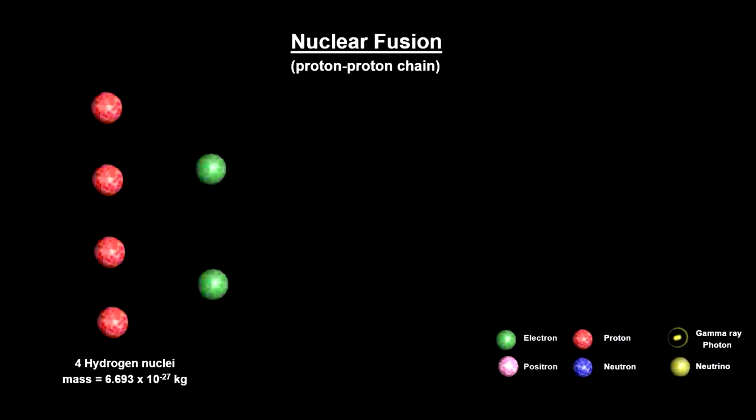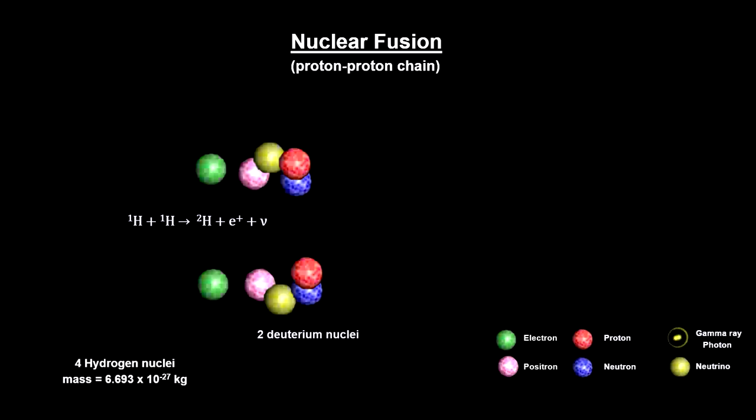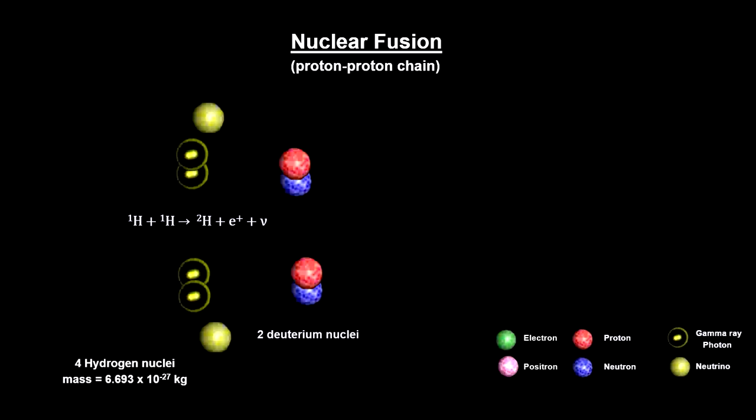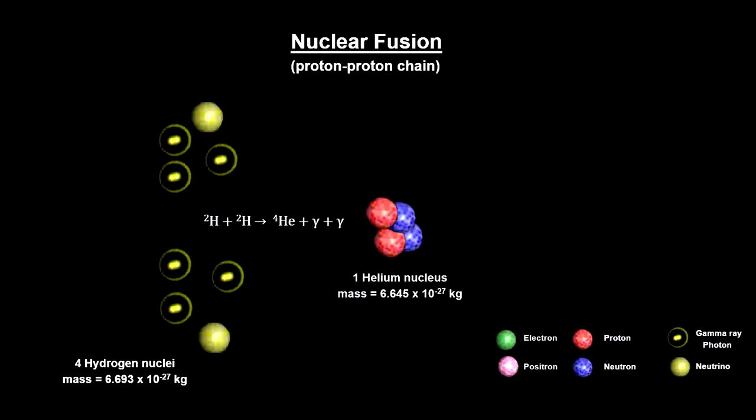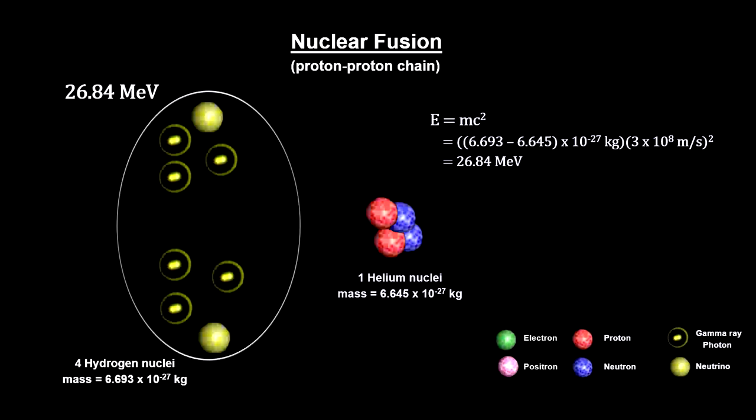They start shining once the pressure and temperature at the core reaches the level needed to support hydrogen fusion. The fusion of hydrogen into helium converts some of the mass into energy. And because E equals mc squared and c is a very big number, the process generates a great deal of energy.